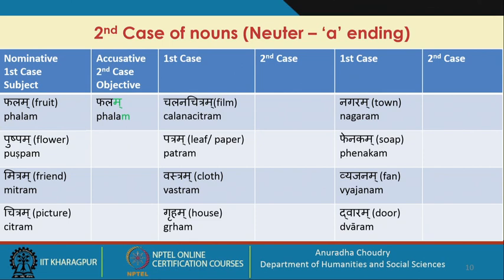Next, we look at the neuter. What is interesting is that if you have a neuter word like phenakam meaning soap — phena means foam so it is a foam-maker — in the first case it is phenakam, and in the second case it is also phenakam. Phenakam asti, phenakam pashyami. Pushpam asti, pushpam pashyami. A new word: kankatam — kankatam asti, kankatam pashyami. Kim pashyami? Kankatam pashyami.